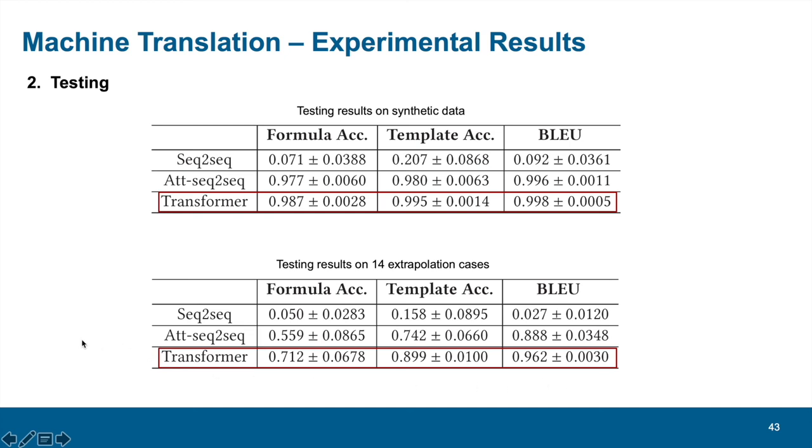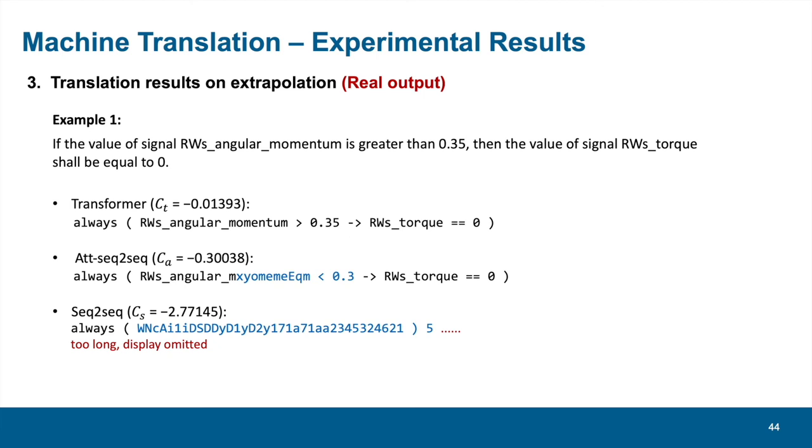Next, we will demonstrate three translation results on extrapolation. Unlike the testing cases shown in the introduction part, where the English requirements are similar in the training set, this time the testing cases are from the real world, and we will see all models would probably make mistakes. In the first example, we can see Transformer translates correctly. However, the attention seq-to-seq model fails to copy the identifiers and the number, and even mis-translates the greater-than relation into smaller. The seq-to-seq model performs very badly. It tends to generate lengthy symbols without explicit meaning.